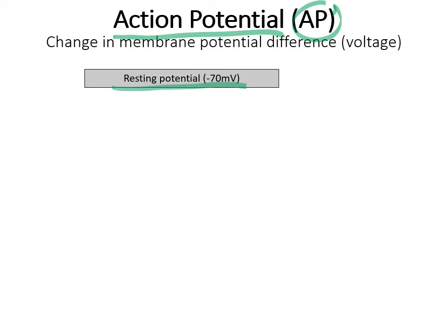Normally, the nerve cells are sitting there with a resting potential: more positive on the outside, fewer on the inside, and therefore the outside is positive, the inside is negative, with a resting potential of negative 70 millivolts.